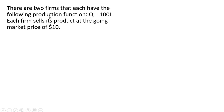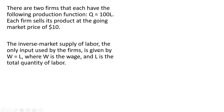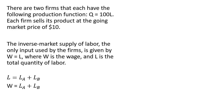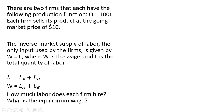There are two firms that each have the following production function. Each firm sells its product at the going market price of $10. The inverse market supply of labor, the only input used by the firms, is given by the equation W equals L, where W is the wage and L is the total quantity of labor. The total quantity of labor equals L subscript A plus L subscript B — the labor employed by firm A plus the labor employed by firm B. Making that substitution in for L, we can set the inverse market supply of labor equal to the following equation. We want to calculate how much labor each firm hires and what is the equilibrium wage.